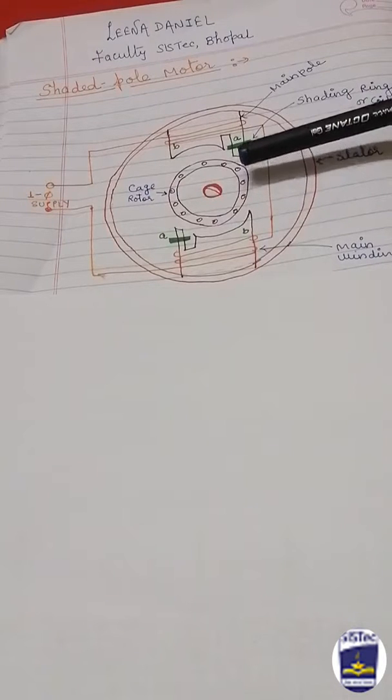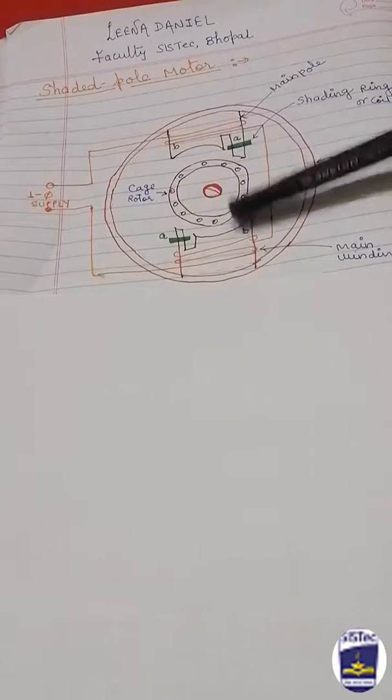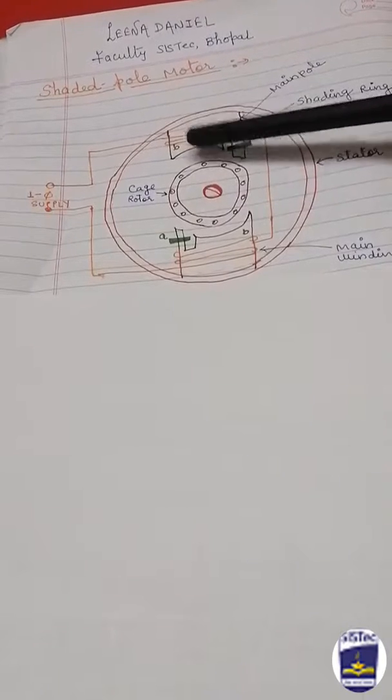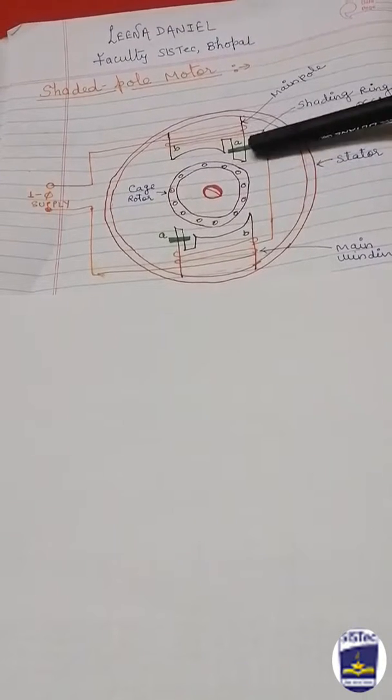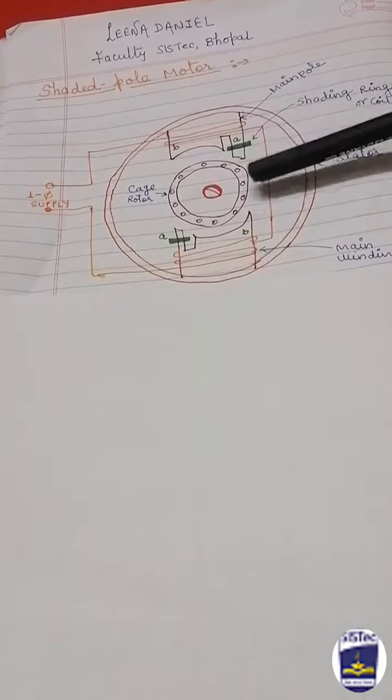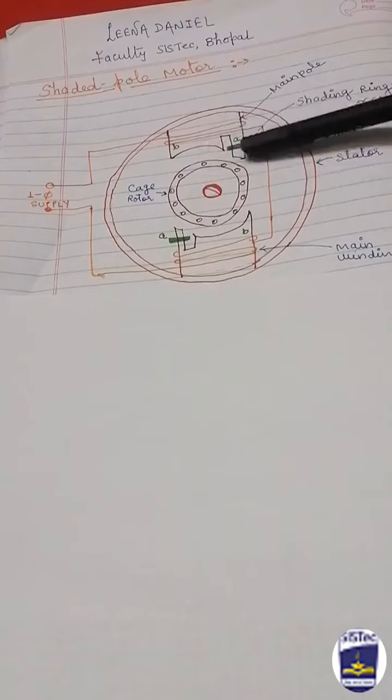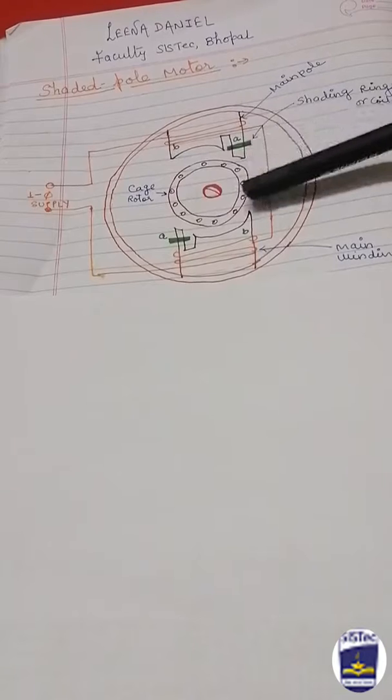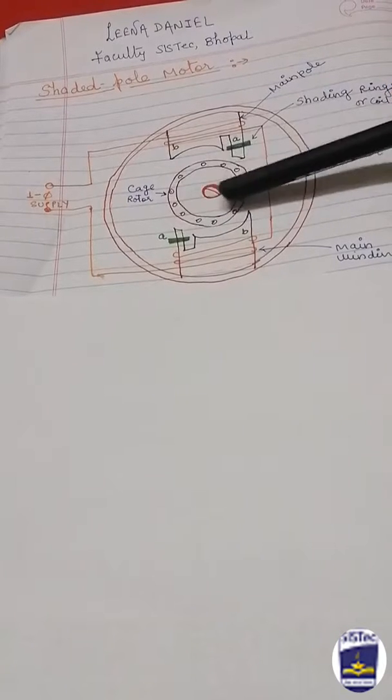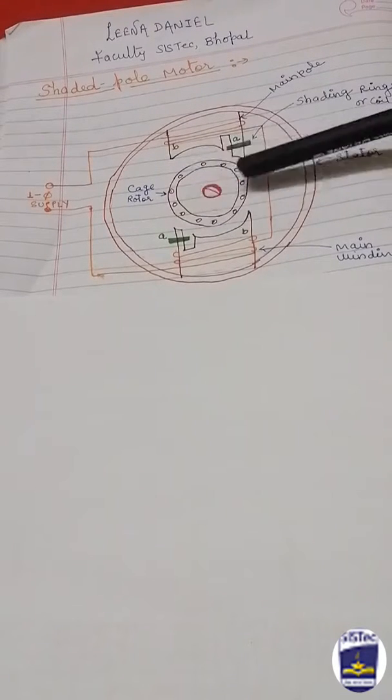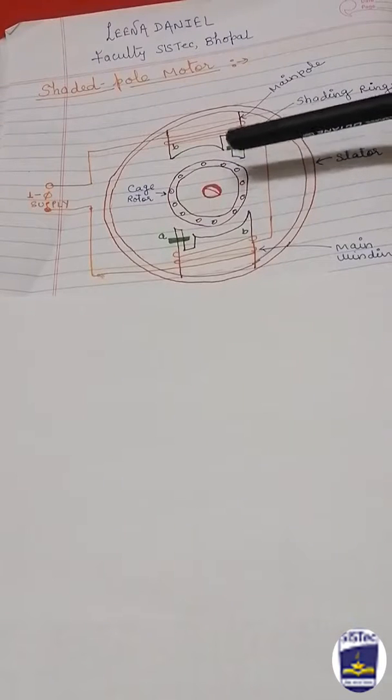The main condition to make the motor run is to create phase displacement between two fluxes. We have two fluxes: one flux of the unshaded portion, second flux of the shaded portion. There is phase displacement between these two fluxes which is responsible for creating the rotating magnetic field and starting torque.